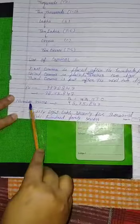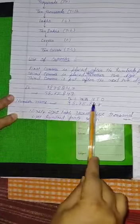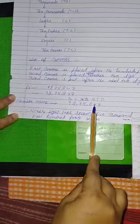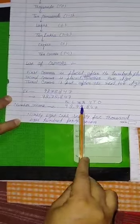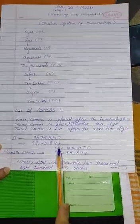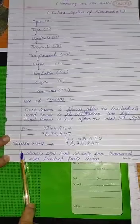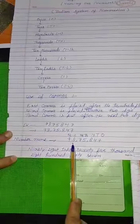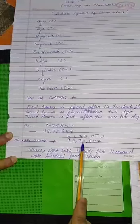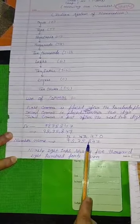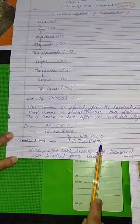Number names. How we read the numbers. First ones, tens, hundred, thousand, ten thousand, lakh, ten lakh. अब हम इसको किस तरह से पढ़ेंगे? 98,75,847.